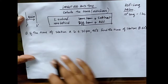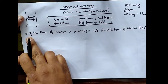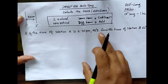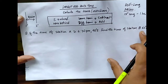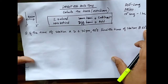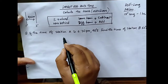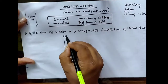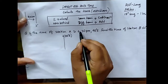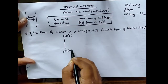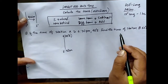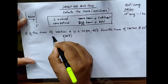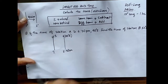Now, here is an example. If the time of station A is 6:30 p.m. at 90 degrees east, we have to find the time of station B which is at 60 degrees east. Station A is 90 degrees east and the time is 6:30 p.m. Station B at 60 degrees east lies behind station A.